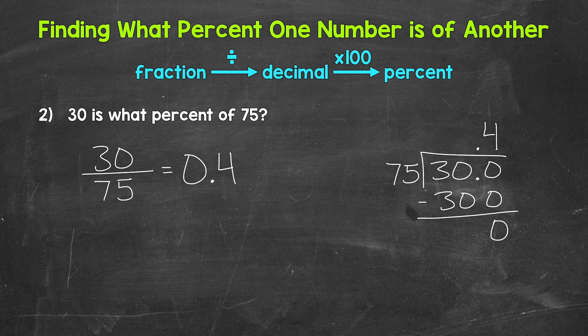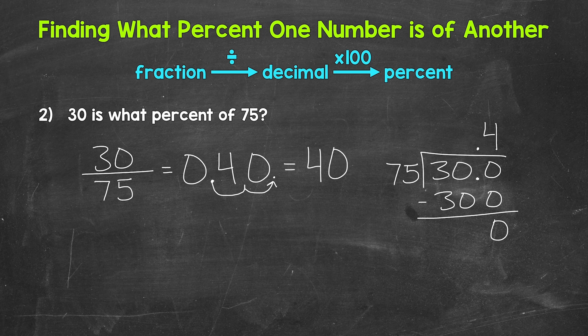Now we need to convert that decimal to a percent by multiplying by 100. A quick way is to move the decimal twice to the right — once, twice — and fill that place with a zero, giving us 40. So our percent is 40 — 40 percent. 30 is 40 percent of 75.